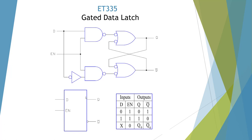Here's the symbol: data, enable, Q, and Q-not. If it's enabled and we put a 0 in, we're going to get a 0 out. If we're enabled with a high, we put in a high on data and we're going to get a high out. If we go to 0 on the enable, we're going to latch the data and ignore all of our inputs — so 0 is the latch condition.